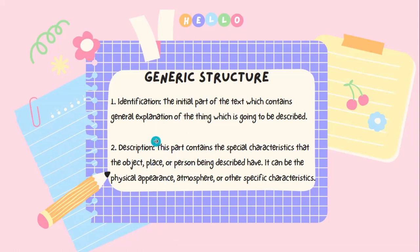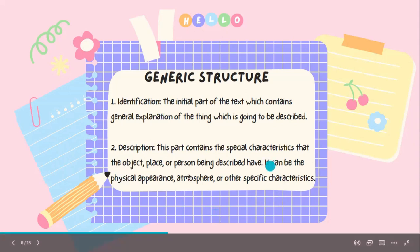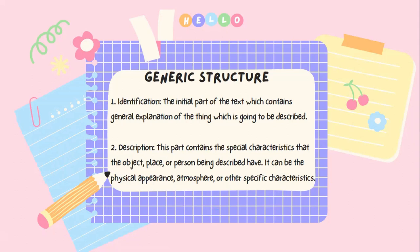Jadi, description ini adalah bagian yang khusus disebutkan ciri-ciri atau karakteristik pada object, ataupun tempat, ataupun orang yang sedang dideskripsikan. Kalau orang, bisa dari physical appearance-nya, atau atmosfernya, atau karakteristik spesifik lainnya. Identification adalah paragraf pertama yang berisi penjelasan secara umum pada objek yang dideskripsikan. Jadi generic structure dari descriptive text ada dua: pertama identification, kedua description.